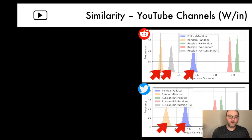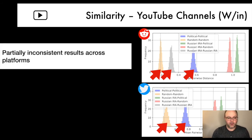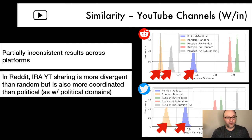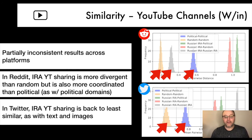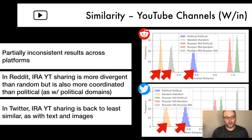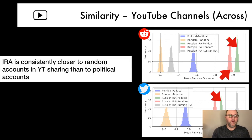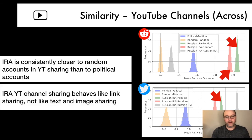For YouTube channel sharing, we see more of what we observed with text and images, but again with some inconsistencies across platforms. On Reddit, YouTube sharing appears more divergent than random but more coordinated than political accounts — similar to what we saw with political domains. On Twitter, YouTube sharing is least similar, as with text and images. Looking across groups, the IRA is consistently closer to random accounts in YouTube channel sharing, behaving more like link sharing than text and image sharing, which is surprising.